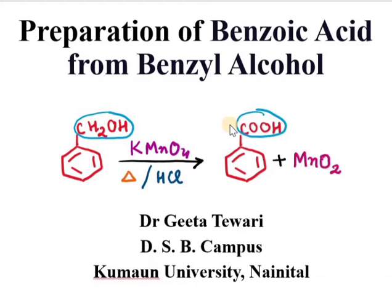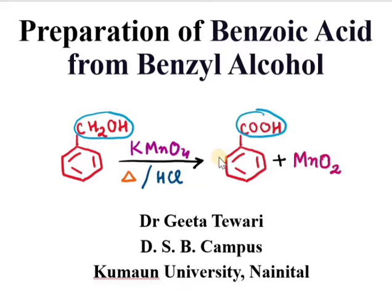In this lecture we will see the practical — how to prepare benzoic acid from benzyl alcohol. It is a very easy exercise in which, by simple heating of KMnO4 and then addition of benzyl alcohol, this will generate the potassium salt of benzoic acid, potassium benzoate. That potassium benzoate can then be converted with the help of HCl — when we react potassium benzoate with HCl, the formation of benzoic acid takes place.